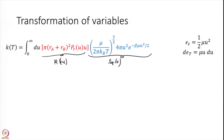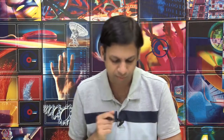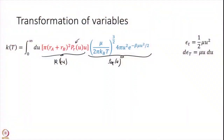To make progress, we will make a variable transformation into energy units rather than speed. The reason is that the probability P_r is much more natural to calculate in energy units. Hopefully that will become clear in a few more slides. We make the transformation ε_t equal to ½μU², and from this we can find a differential.